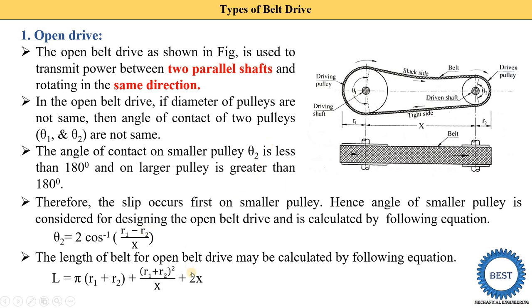The length of the belt is calculated from the diagram. Here we have π × R1, and π × R2, then 2X for the straight sides. Because the belt is not horizontal but slightly inclined, we need to add the term (R1 + R2)² / X. Using this equation we can find out the length of the belt.